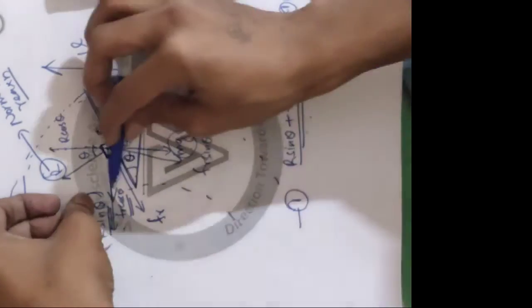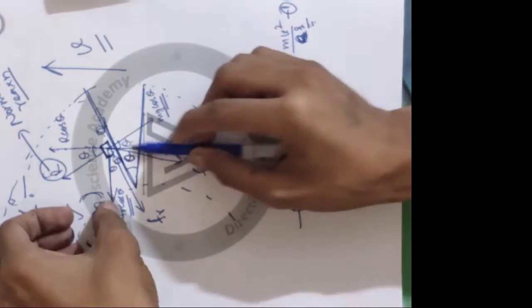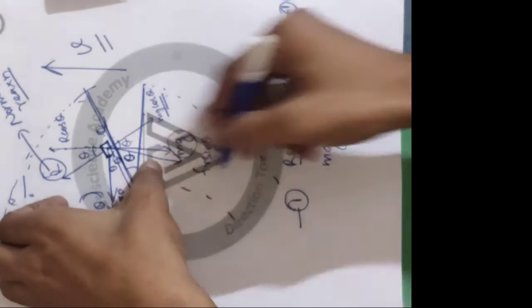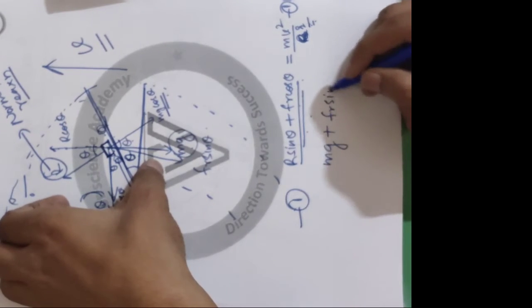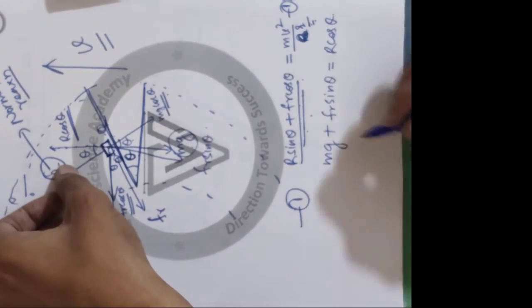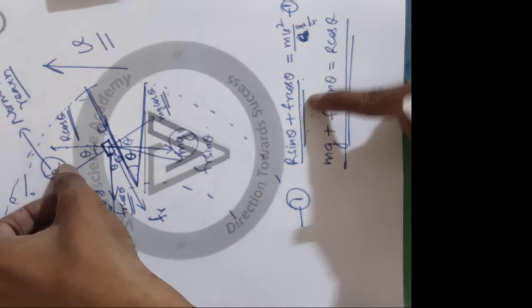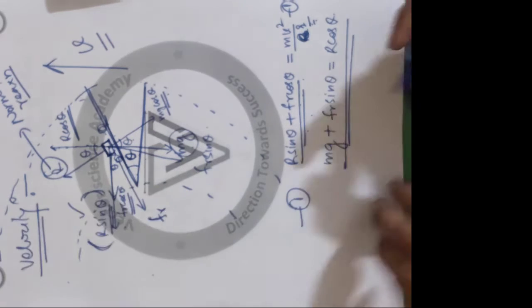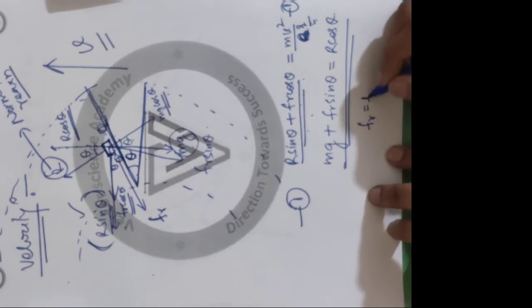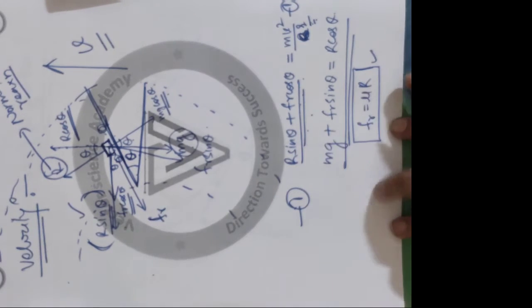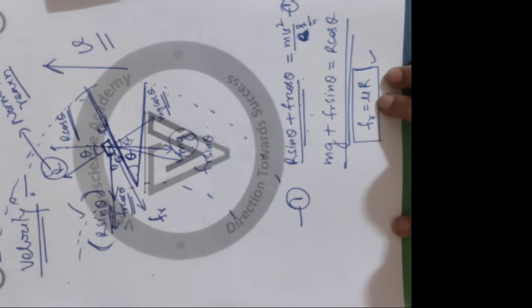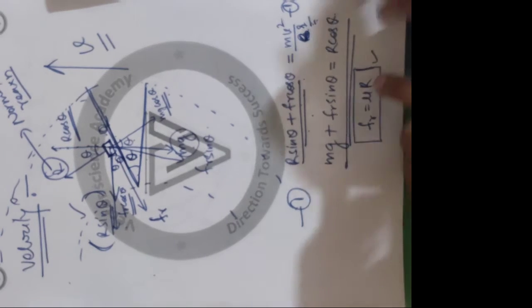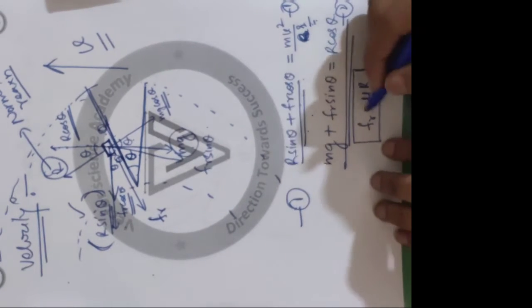For the vertical direction, the forces are: mg downward plus Fr sin theta equals R cos theta. This is the second equation. Also, the friction force formula is f = μR, where μ is the coefficient of friction and R is the normal reaction.